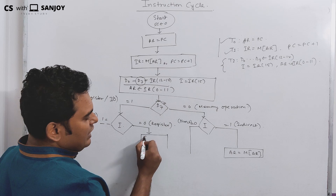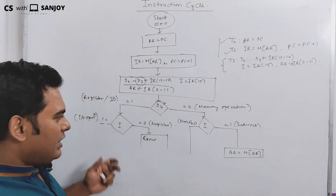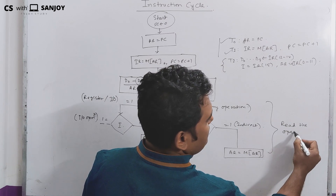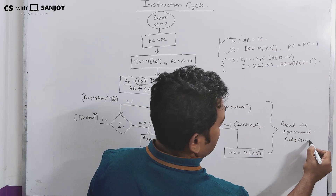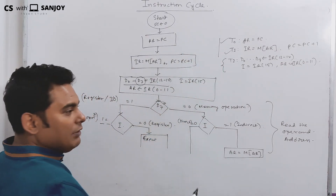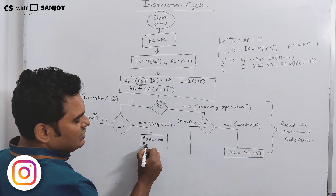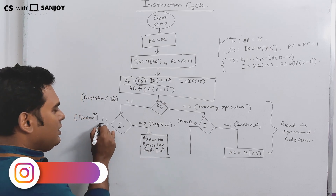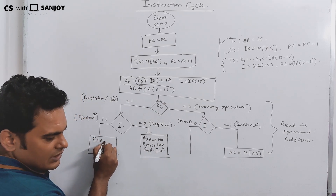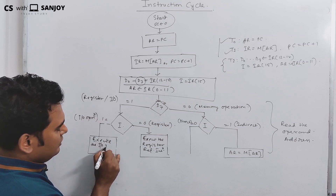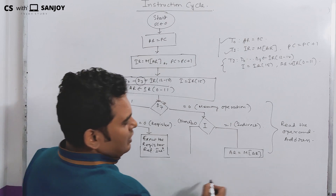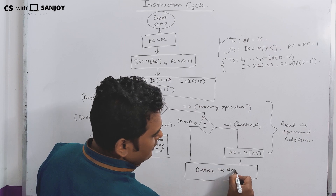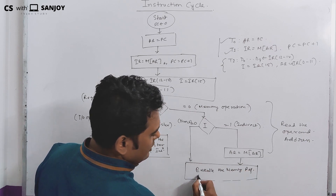When D7 is 1 and we check further bits: if it is a register reference instruction, we execute the register reference instruction. If it is an I/O instruction, we execute the I/O instruction. And if D7 is 0, we execute the memory reference instruction.